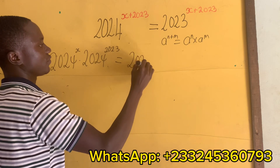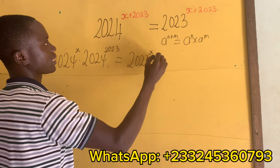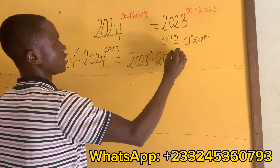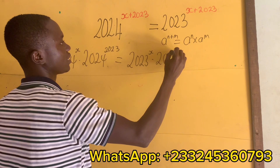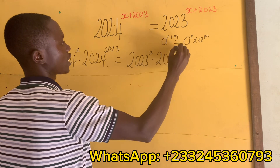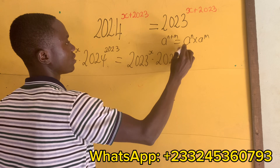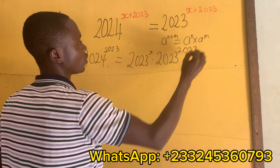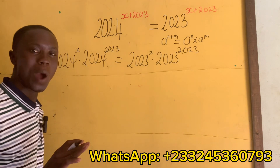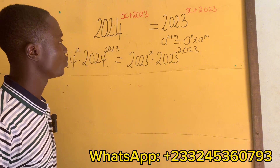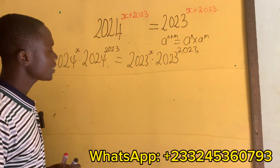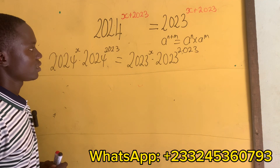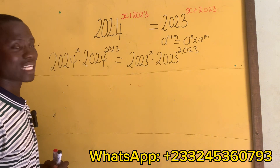That's x times 2023 exponent 2023. It's very simple. Let's see how we do this.